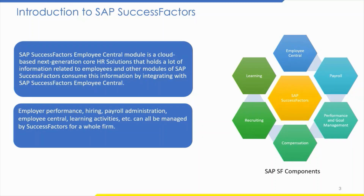In this blog, we also cover how to manage picklists and create picklist values, events and event derivation, different business rules and their applicability, different types of workflows like transfer, promotion, escalation, position management, role-based permissions, permission groups, manage business configuration, employee profile, DG filters, mass changes, HRIS sync mapping, input employee data, employment information domain, and the different actions you can perform after creating reports.